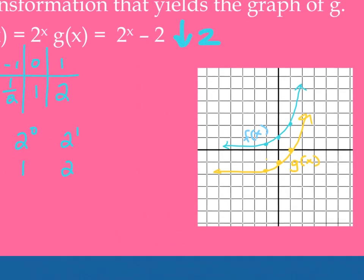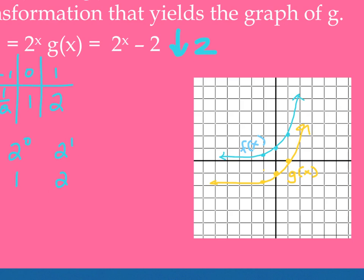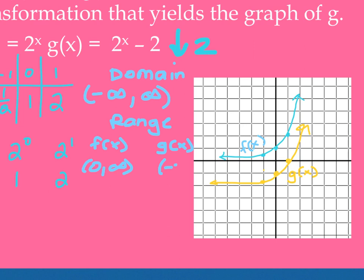And then I said to add on there the domain. So what's the domain? Negative infinity to positive infinity for both? Yes. How about my range? For f(x), it's zero to positive infinity. How about for g(x)? Negative 2 to positive infinity.